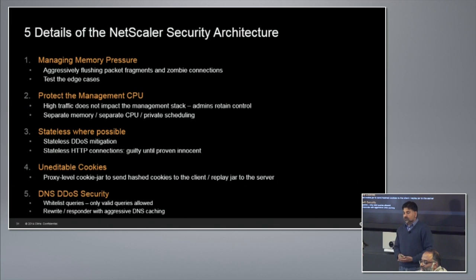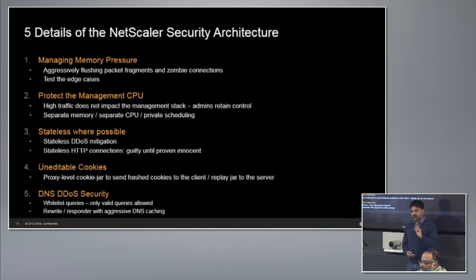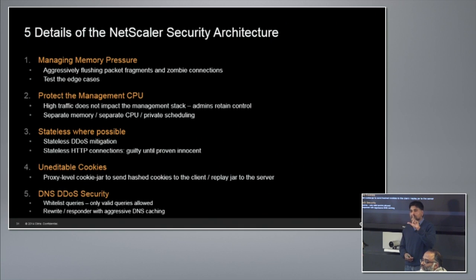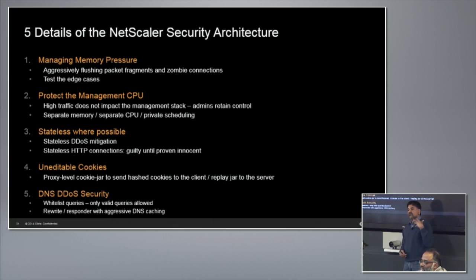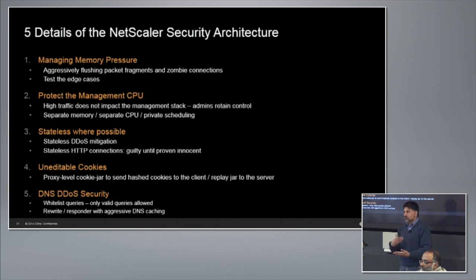We manage memory pressure two ways: first, taking advantage of protocol features that allow flushing unacknowledged fragments in a TCP packet that hasn't been fully reassembled yet. Second, as part of our QA process we actively test the edge of memory on an ongoing basis — running the box at 100% and hitting it with traffic to make sure it doesn't fall over. We also keep management CPU separate so you can still see what's going on during an attack. For HTTP, we don't allocate memory until we get a valid HTTP request — so you can open what looks like a full valid connection and we just wait for the GET with no memory allocated.